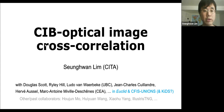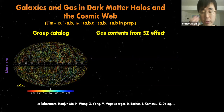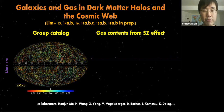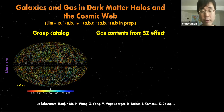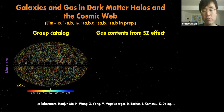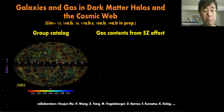Before getting into this particular study, let me introduce a little of my past work and general research interests. This was the first slide of my PhD defense. During my PhD I constructed a group catalog by applying a halo-based group finder, which I developed and improved, to galaxies from observational surveys. I then used this catalog to study the connection between galaxy properties and dark matter halo properties in various aspects and comprehensive ways.